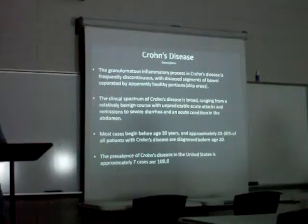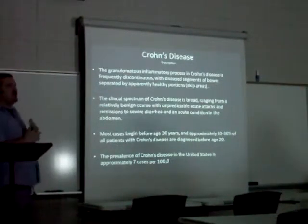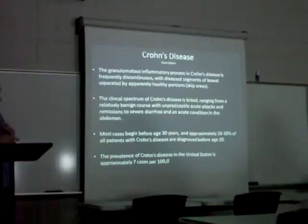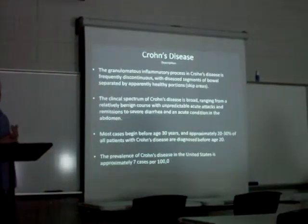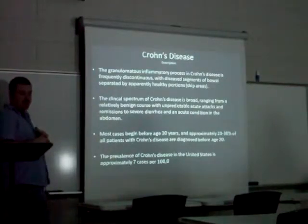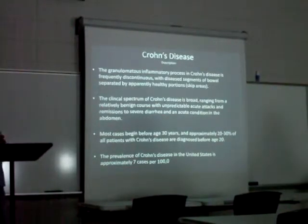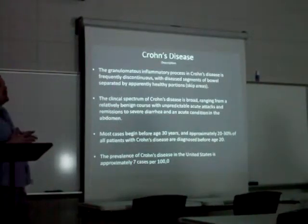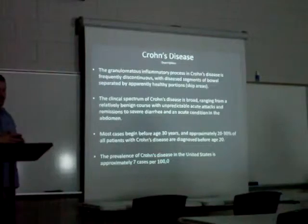Skip lesions are an important characteristic of Crohn's disease — it manifests not as a continuous segment but as alternating sections of infected and normal bowel. The clinical spectrum ranges from relatively benign disease with unpredictable acute attacks and remissions to severe diarrhea. Most cases begin before age 30, and approximately 20 to 30% are diagnosed before age 20. The prevalence in the United States is approximately 7 cases per 100,000 population.